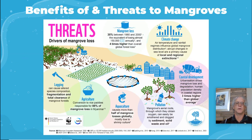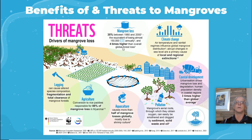Threats to mangroves include logging, agriculture — converting mangroves to agricultural land — and aquaculture, with half of mangroves lost globally. Pollution from sediments, solid waste, or oil. Coastal development: building buildings or parking structures. Climate change, where warming temperatures are changing the acidity. Overall, mangroves are being cut down at four times the global deforestation rate, with almost 150,000 basketball courts' worth lost annually from mangrove forests.